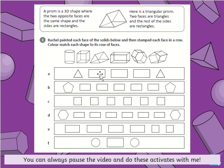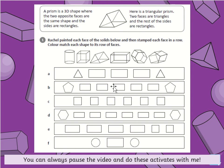So this would match up to the triangular prism. You can either colour code it, draw a line, or write it — up to you. If you're doing this on paper you could write 'A equals triangular prism' and then move on to the next one. For B, there's a pentagon and a pentagon and five rectangles — see if you can figure out which shape it matches. You can always pause this video, go and do the activity, then come back and watch the rest.